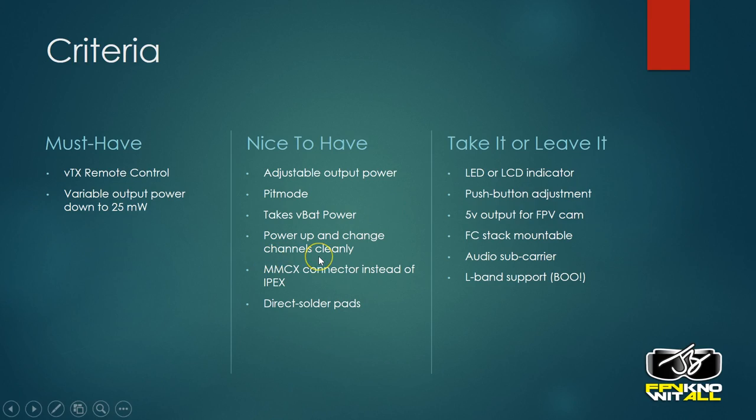Nice-to-have is the ability to power up and change channels cleanly. When you change channels, some devices blast noise across the whole frequency band, while others change channels cleanly so you won't interfere with other pilots unless you actually change onto their channel. Unified introduced this feature first, and TRAMP has it as well. You really shouldn't be changing channels while people are flying, but if you do, it helps to have a transmitter that does it cleanly.